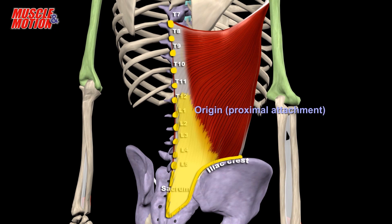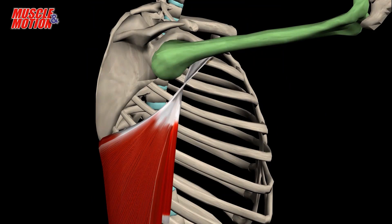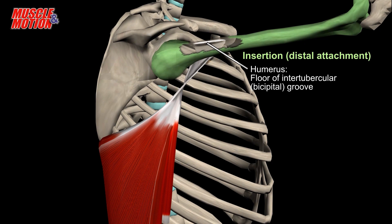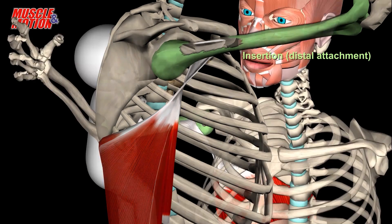The thoracolumbar fascia origin increases its strength and impacts lumbar support during movement. The fibers of the Latissimus Dorsi move superiorly and laterally, and insert — distal attachment — at the intertubercular sulcus of the humerus, also called the bicipital groove.